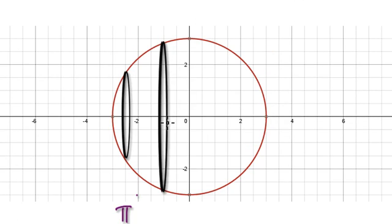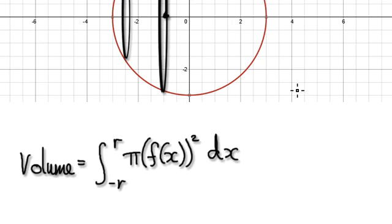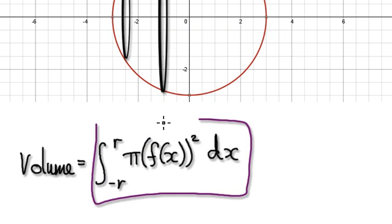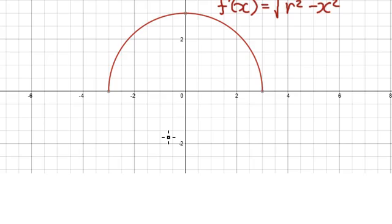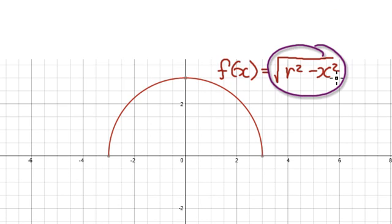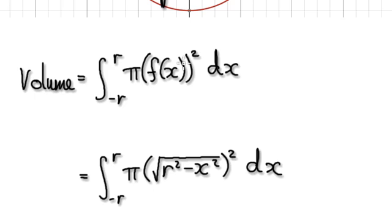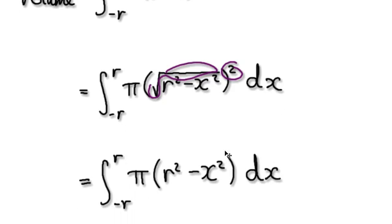You get the height here and then square it times pi — that's this integral. Don't forget f of x is given by the square root of r squared minus x squared. We put this into the f of x position. So you've got a square root and then you square it — those cancel, taking you to pi times (r squared minus x squared). Multiply this out and it gives you that expression.